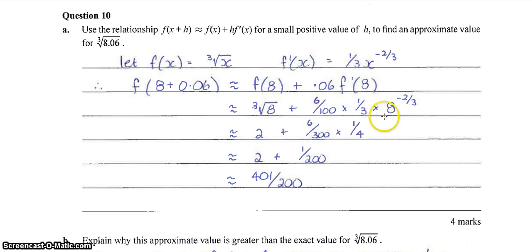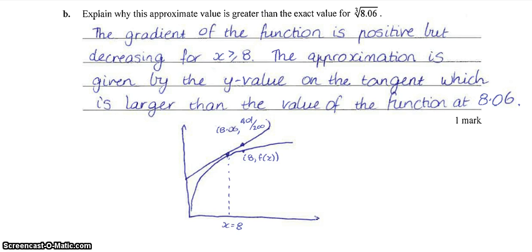Just changed the 0.06 to 6 over 100 here because I knew I was going to be working with fractions. Just make it a little bit easier. 8 to the negative 2 on 3 is 1 quarter. So if we simplify all of this, we end up with 401 over 200, making sure we use these approximate signs the whole way down.